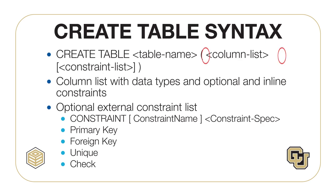In the syntax, the square brackets mean that the element is optional. A column list involves a column name and optional inline constraints. After the column list, you have an optional list of external constraints. This lesson will just cover the column definitions. The next lesson will show examples of constraints, both inline and external.